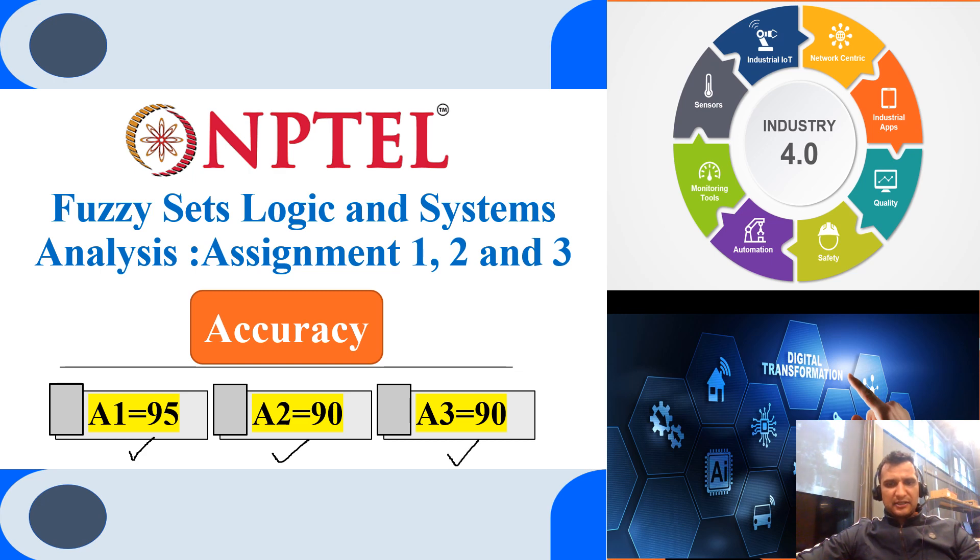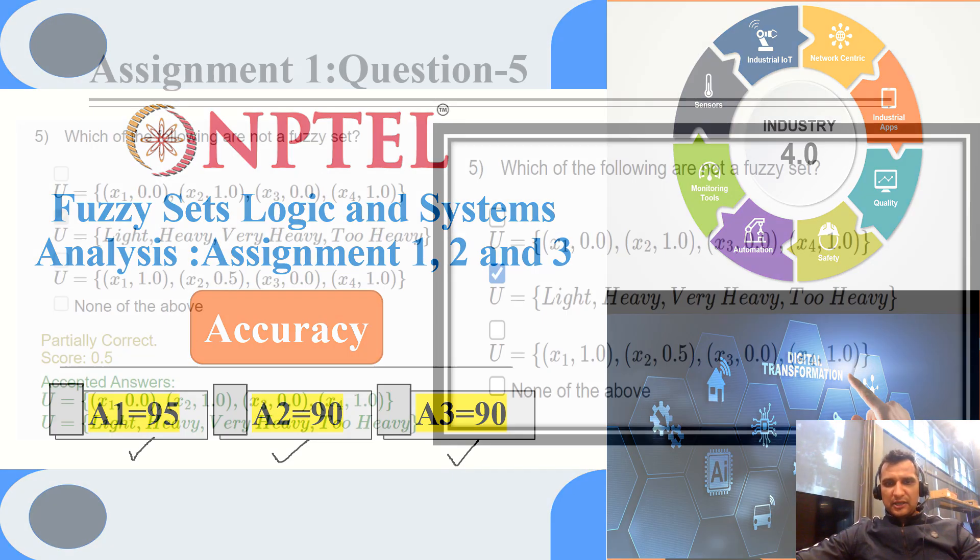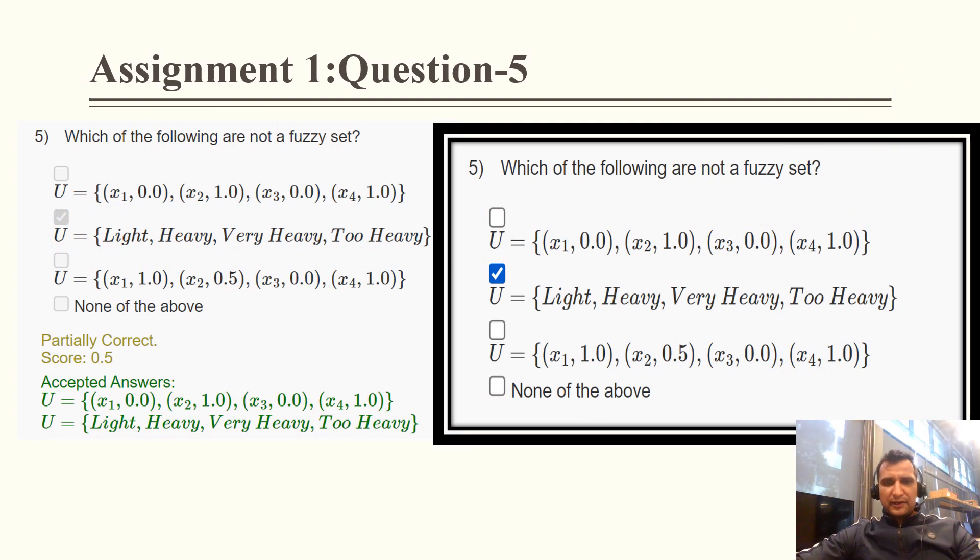In assignment 3, we also got 90% accuracy, but this accuracy can be 100% and there are minor mistakes which we must take care of for the final assessment. Which of the following are not a fuzzy set?